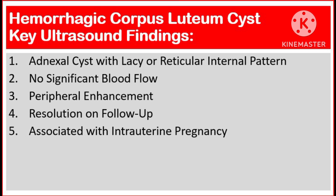Hemorrhagic corpus luteum cysts key ultrasound findings: Number one, adnexal cyst with lacy or reticular internal pattern. Number two, no significant blood flow. Number three, peripheral enhancement. Number four, resolution on follow-up. Number five, associated with intrauterine pregnancy.